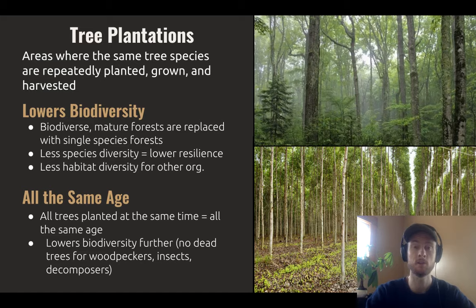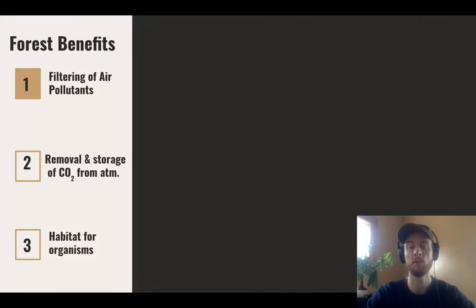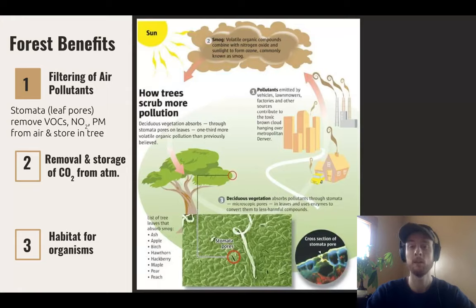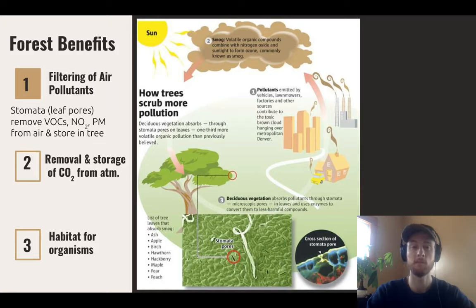Dead trees provide nutrients for decomposers and homes for many different organisms. To understand the longer-term consequences of deforestation and clear cutting, we need to look at the benefits that forests provide — air filtration, removal of CO2 from the atmosphere, and a great reservoir for biodiversity. The stomata, or leaf pores of trees, will oftentimes intake different air pollutants — things like volatile organic compounds, nitrogen dioxide, and particulate matter — and store them in the trees. These pollutants emitted by homes, factories, and especially power plants are taken right into the tree via the stomata. The tree then converts those into less harmful substances and stores them in the tree or soil, literally scrubbing the air clean of pollutants.